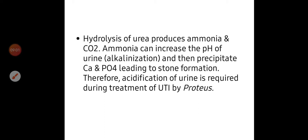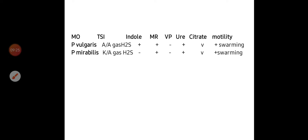Urease activity will lead to alkalinization of urine, leading to precipitation of calcium, phosphate, and magnesium stones. So treating stones caused by Proteus is by acidification of urine to decrease the alkaline pH produced by Proteus. This is to treat UTI by Proteus. Proteus vulgaris on triple sugar iron agar will be acid/acid with H2S production — so it will produce a black color. Indole positive, methyl red positive, Voges-Proskauer negative, citrate utilization variable, urease positive, and motility positive.